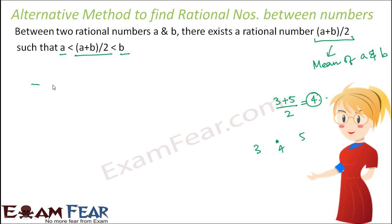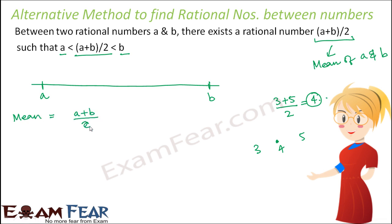Consider a number line with points A and B. We have to find rational numbers between A and B. First, we calculate the mean of A and B, which is (A plus B) divided by 2 — call this point C. So C is the midpoint between A and B, giving us one number between A and B. Now to find more, we find the mean between A and C, which gives the midpoint — call it D.